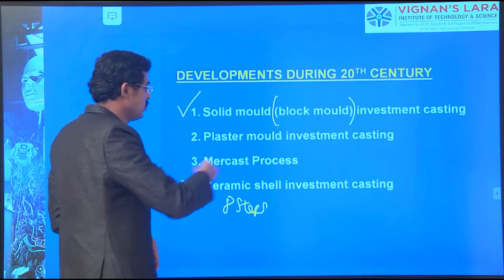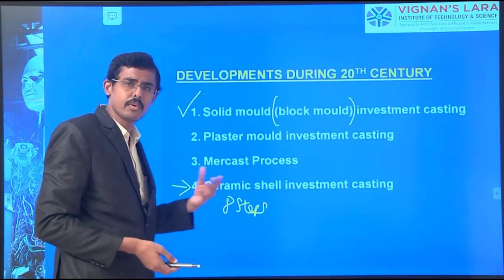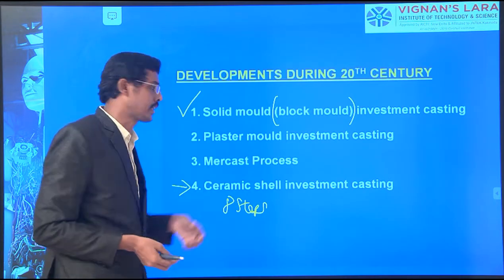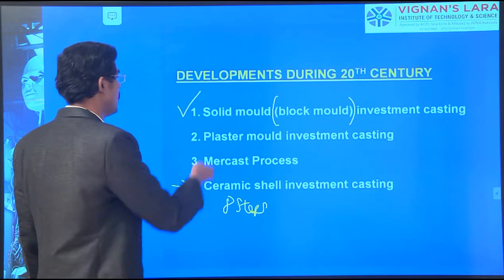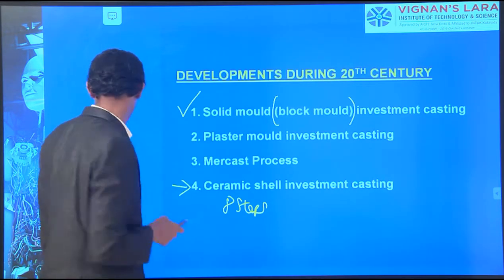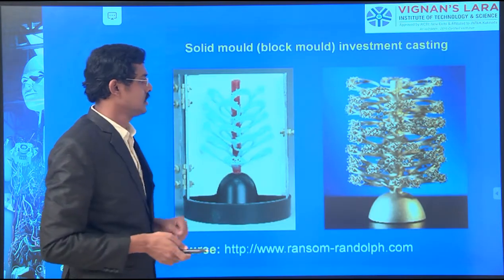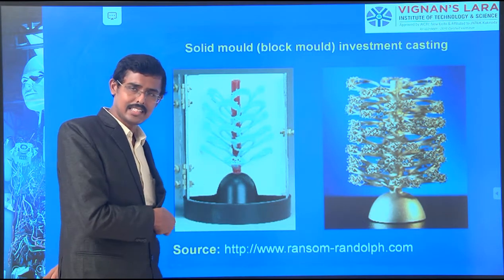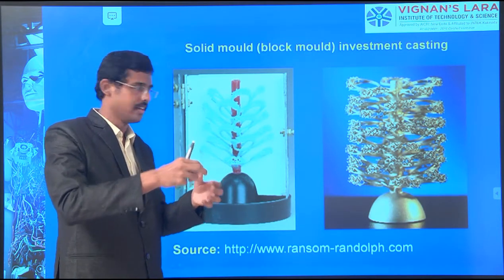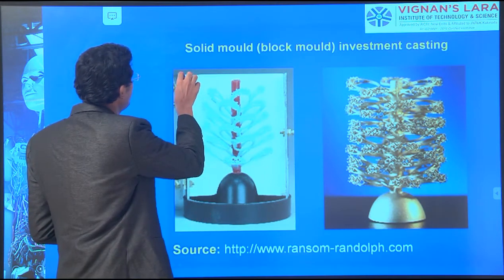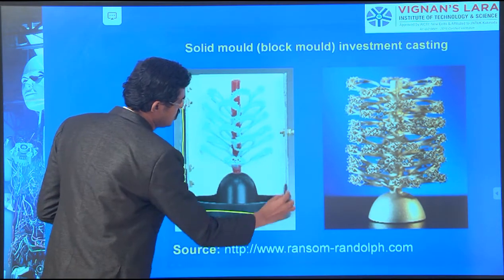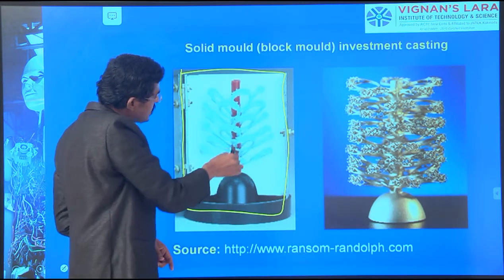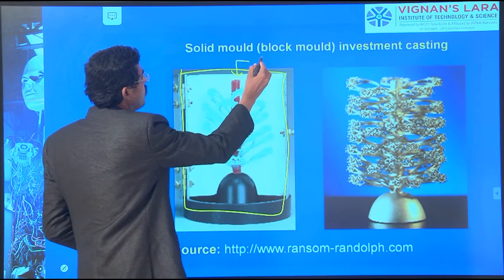So we have solid mold, plaster mold, and other types available in investment casting. I am talking about solid mold casting first. How is it prepared? They make a wax design inside a box. The red color you see is the central sprue through which we have to pour.